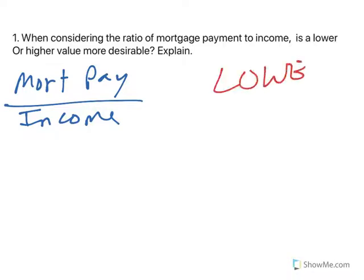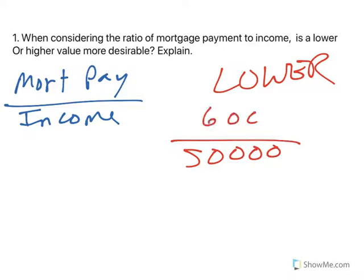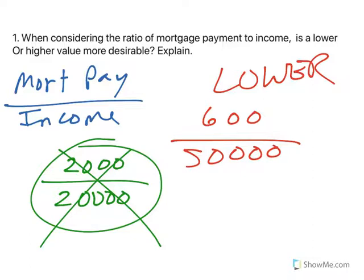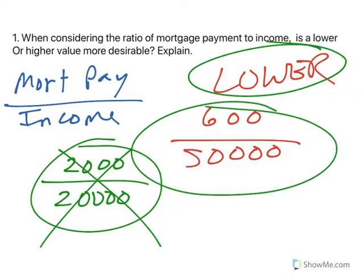The answer is lower. You want your income to be much higher than your mortgage payment. For example, your income could be $50,000 and your mortgage payment $600 — that would be a lower ratio. But if you're making a mortgage payment of $2,000 and your income is $20,000, that's a much higher ratio and would really suck to live on. You want your income way more than your mortgage payment so you have more money accessible if something breaks, if you want to eat, put gas in your car, buy a new car, or go on vacation. A lower ratio gives you more free money.